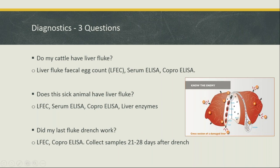One issue with faecal egg counts and coproantigen tests is that results can be quite variable because of the intermittent way eggs are deposited from the gallbladder. The gallbladder acts like a reservoir — as bile gets squirted into the small intestine during digestion, the eggs come out intermittently, not consistently. This is a biological issue rather than a test issue, but being aware of it is key. The right test should always be chosen for the right question at the right time.